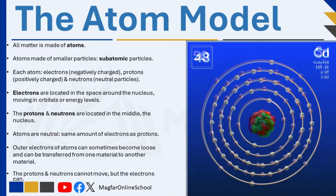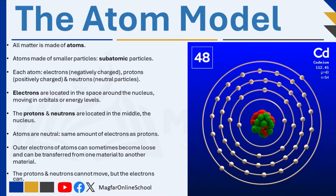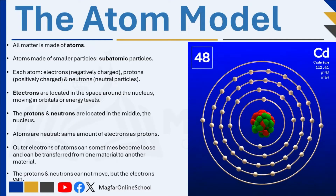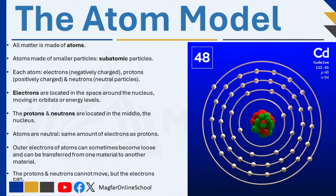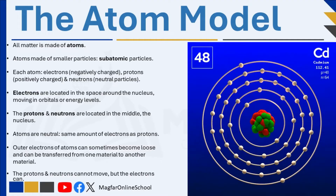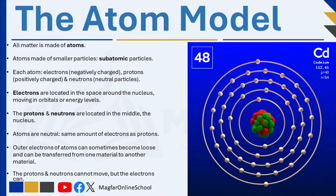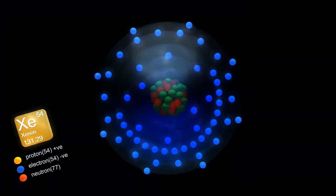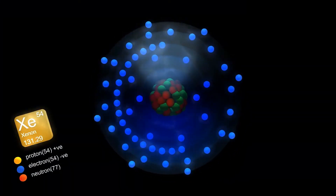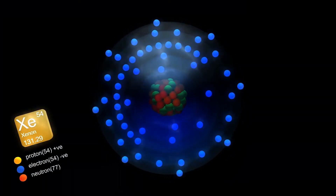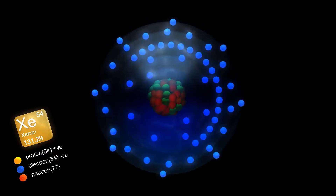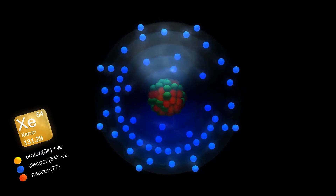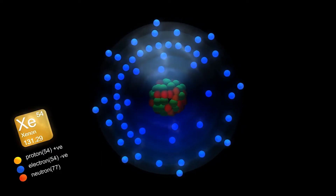Atoms are usually neutral — in other words, they contain the same amount of electrons as protons. However, the outer electrons of atoms can sometimes become loose and can be transferred from one material to another. The protons in an atom cannot move, but the electrons can. This means that negative charge can move, but positive charge remains fixed.